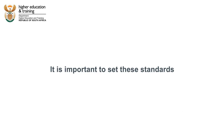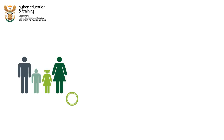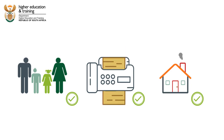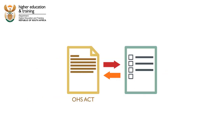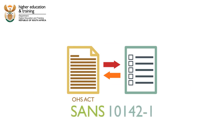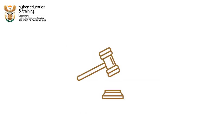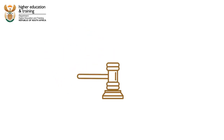It is important to set these standards and regulations to make sure that people, things and property are kept safe and that things work as they should. The Occupational Health and Safety Act requires that all electrical installations comply with SANS 10142-1. This means that these codes are mandatory and have the force of law.